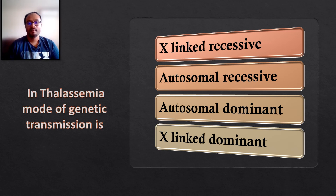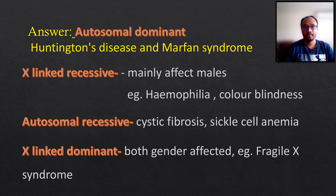The next question: in thalassemia, the mode of genetic transmission is — and the options are X-linked recessive, autosomal recessive, autosomal dominant, and X-linked dominant. The correct answer given is autosomal dominant. Diseases like Huntington's disease and Marfan's disease are transmitted by autosomal dominant method. Diseases like hemophilia and color blindness are transmitted by X-linked recessive genes.